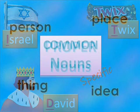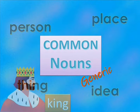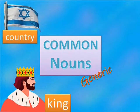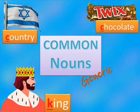A common noun is a generic name of a person, place, thing, or idea. Examples of common nouns are King, Country, and Chocolate. They are not capitalized unless you write them at the beginning of a sentence.